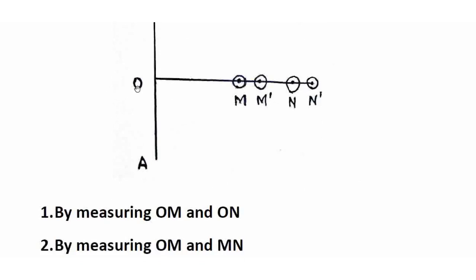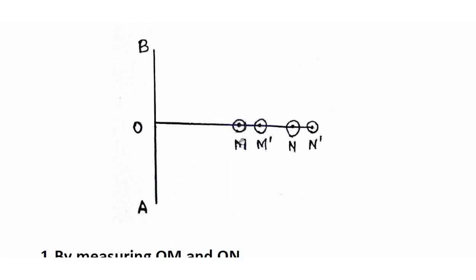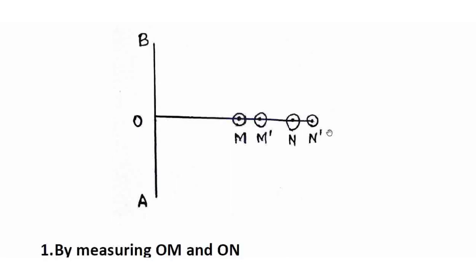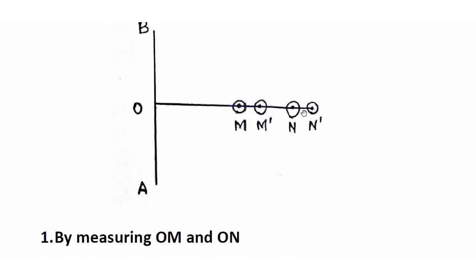We can measure OM and ON. Otherwise, we can measure OM and MN — if we add OM and MN, we can determine ON. So in two types we can measure this line. If OM is measured, the error is at M prime. If we have an error in M, we can measure OM and ON. If we measure OM and ON, the error in M is minor. This is the whole to part approach.